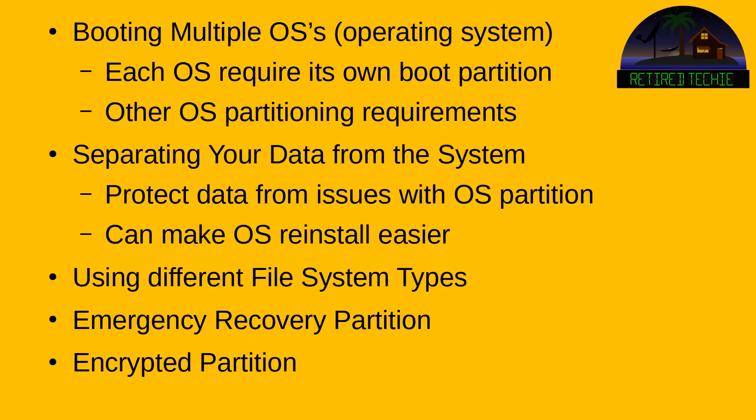Separating data can make reinstallation of an OS much easier. You may also want to use different file systems than what came with your operating system — there are lots to choose from. Another use for a separate partition would be an emergency recovery partition, similar to an emergency recovery USB key, where you'd have a small partition with an OS and recovery utilities set up as bootable. If your main partition fails, you can boot into your emergency recovery partition. You may also want an encrypted partition if you want to encrypt some pieces of data without encrypting the whole drive — a partition can be encrypted without affecting the rest of the drive.